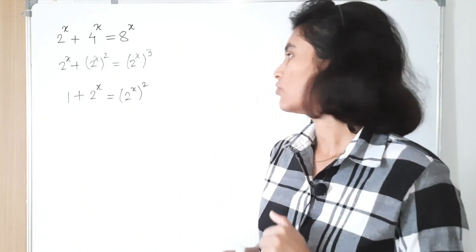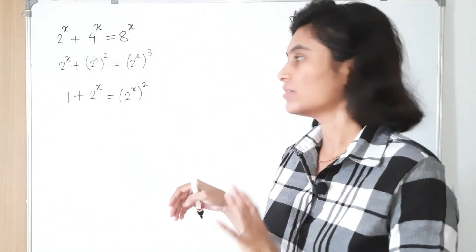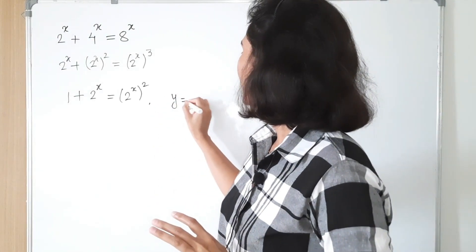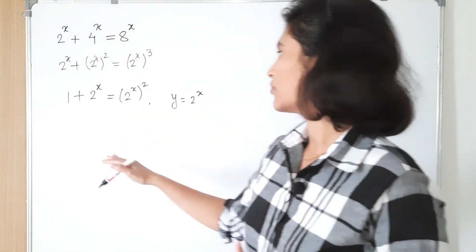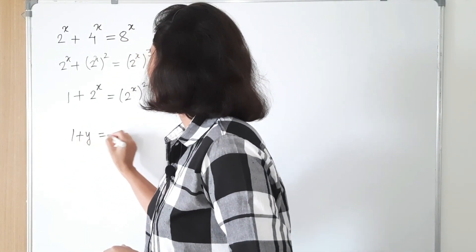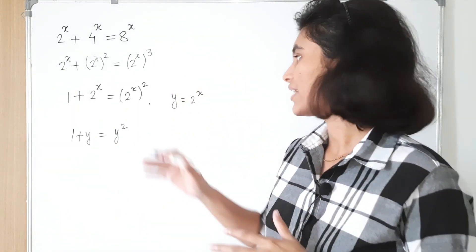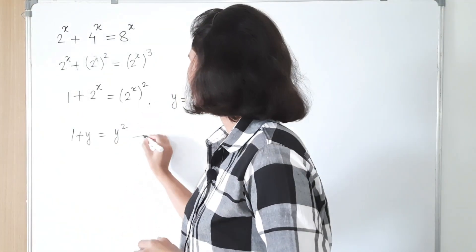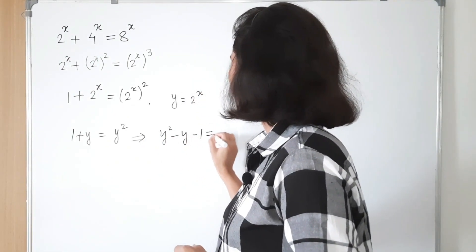At this point it looks like an equation in 2 raised to x, so we can call 2 raised to x some variable for simplicity. Let y equal 2 raised to x. This equation becomes 1 plus y equals y squared, and we can easily solve this quadratic equation: y squared minus y minus 1 equals zero.